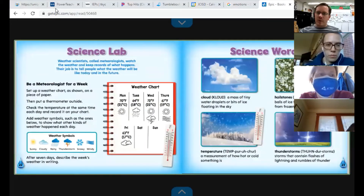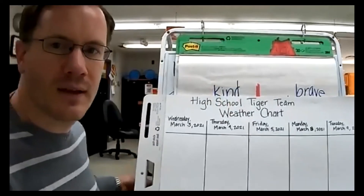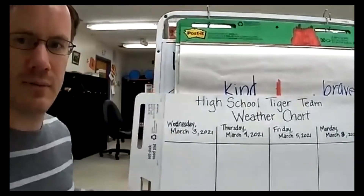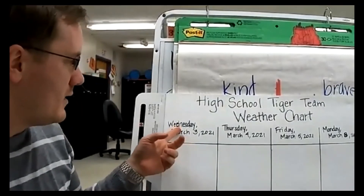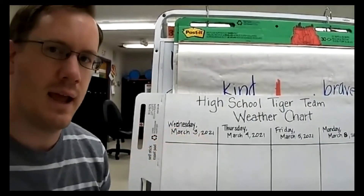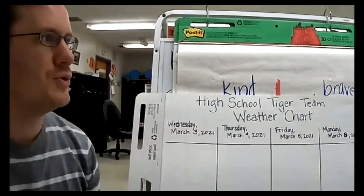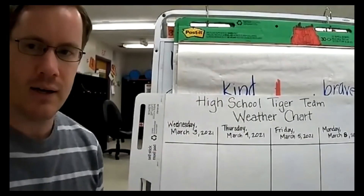One of the ways we measure weather is by creating a chart so we can mark the weather each day and see if it's staying the same or how it changes. Behind me I have the start of our weather chart. Today it says Wednesday, March 3rd, 2021. We need some help to say what the weather is today and we'll put it on our chart.